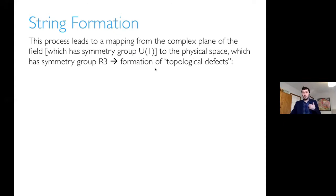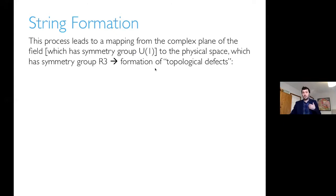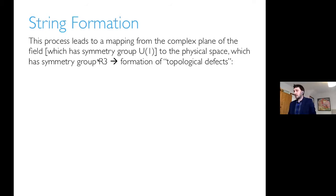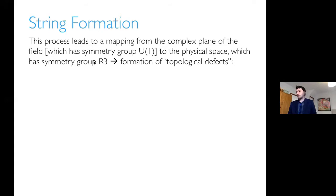This process keeps on continuing. As well as this distribution of theta, we have to worry about the complex field, which leads to the formation of topological defects. We have to map the field distribution in the complex plane — the symmetry group U(1) — to the physical space R3. So we have to map the manifold U(1) onto the manifold R3. This is what gives us topological defects.